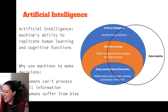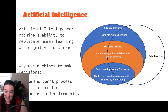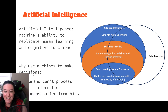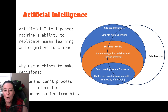Why should we use artificial intelligence and machines to help us make decisions? Because humans can't process all the information, and because humans suffer from bias. In our next video, we'll look at why we should use machines to help us with data analytics.